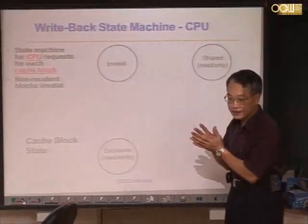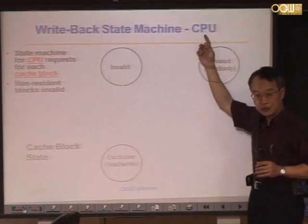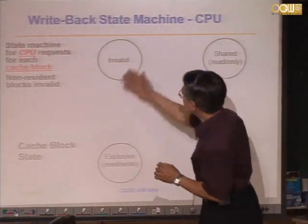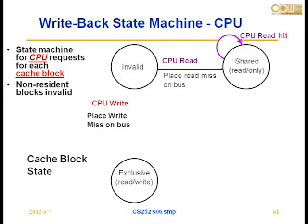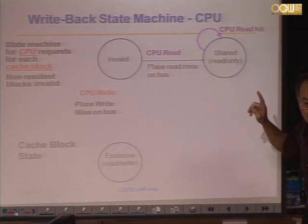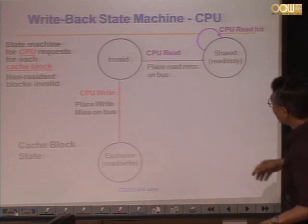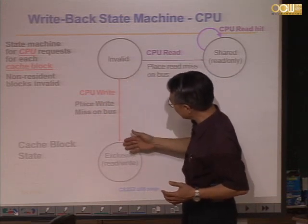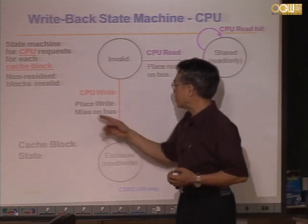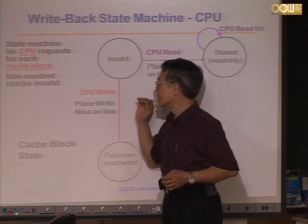For cache blocks, there can be activities happening inside each CPU which cause the state to change. If you don't have a line yet, a CPU read will bring that line in and put it in shared state — whether or not there are other CPUs using that block. However, a CPU write to a non-existing line will bring the line in and put it in an exclusive state, and in the meantime place a write miss on the bus to notify the other nodes that they can no longer use that line.